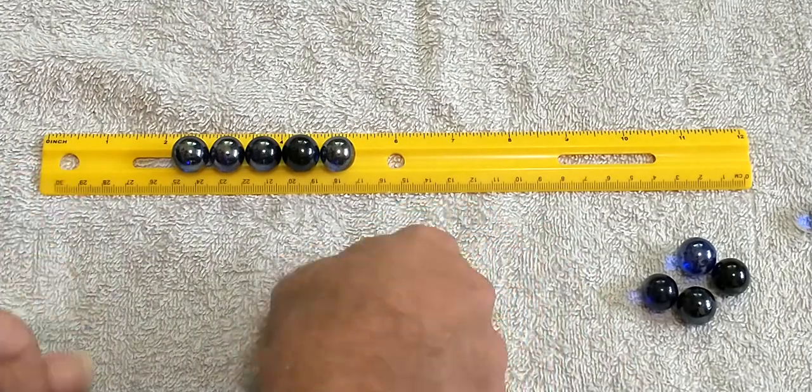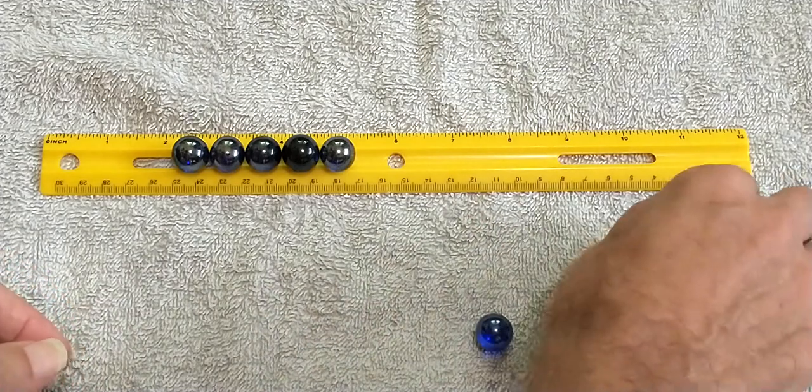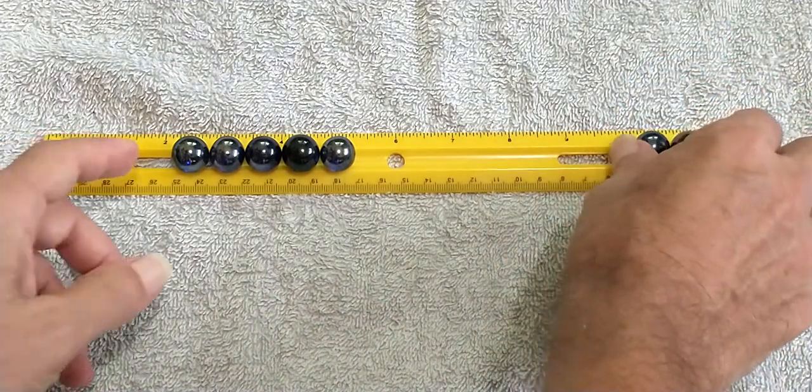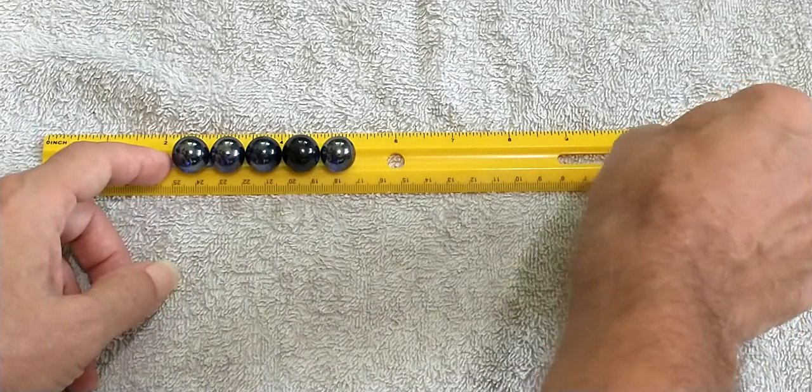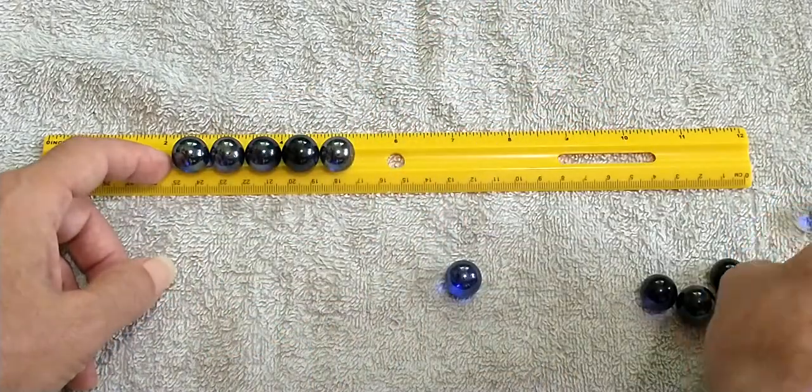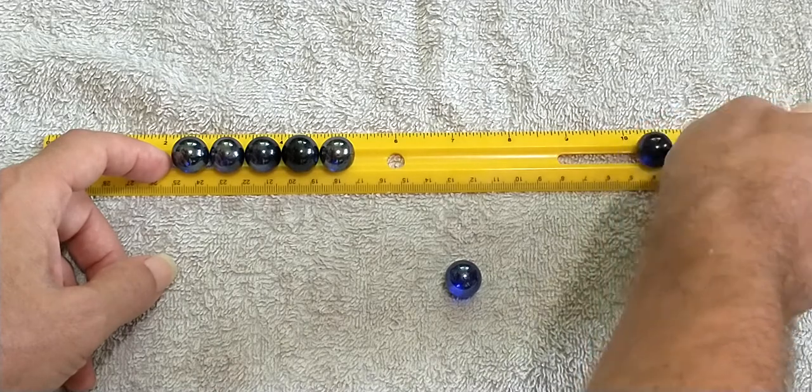Then roll two marbles into the five. Same thing but keep the two together. Roll them in, what happens? Then try three marbles. Roll three marbles in.